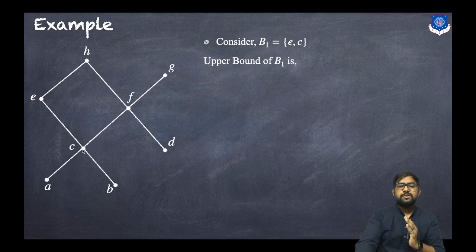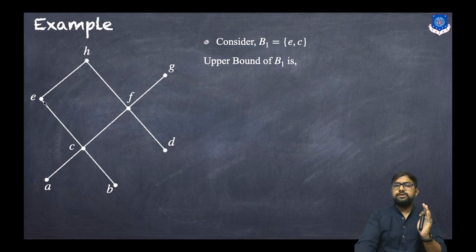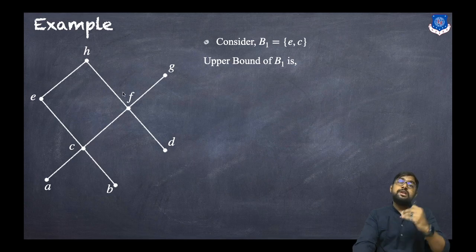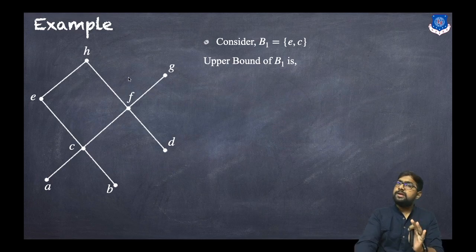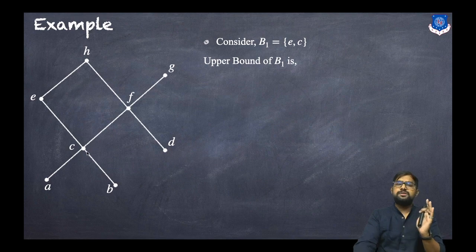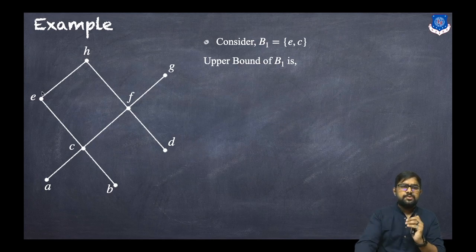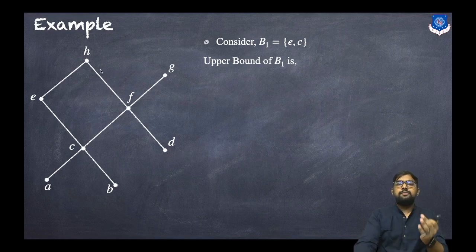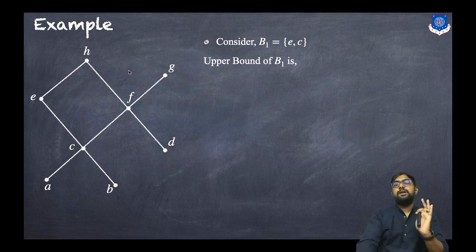Now consider F. Can we go from C to F? Yes. Can we go from E to F? Yes — first E to H, then H to F. Now consider G. Can we go from C to G? Yes — first C to F, then F to G. Can we go from E to G? To reach G from E we would need to go E to H then H to F, but that requires going downward, which is not possible. So G cannot be an upper bound.